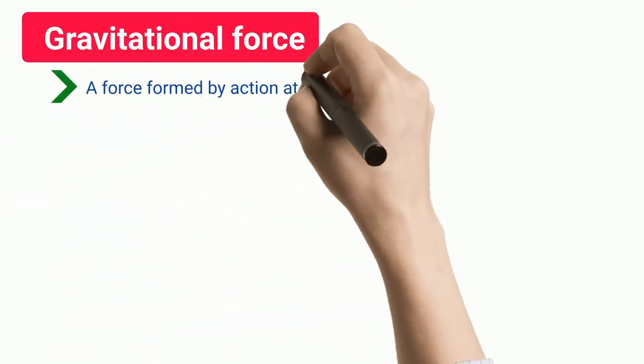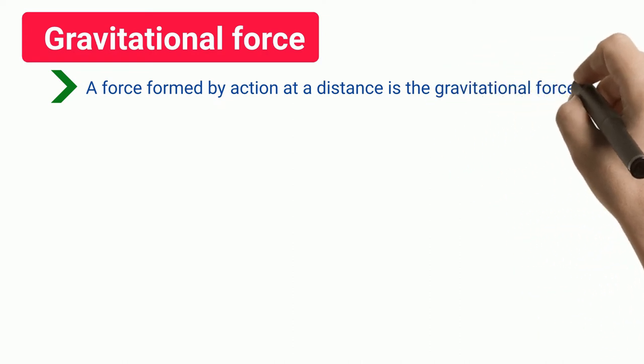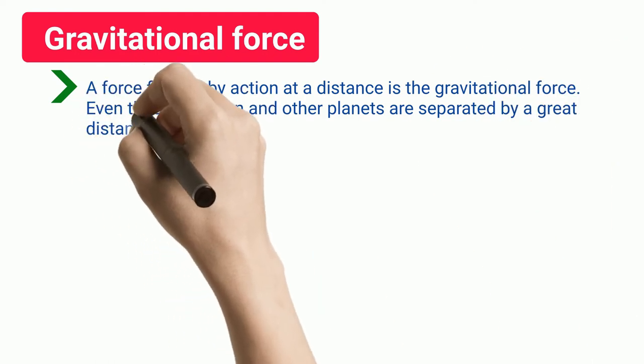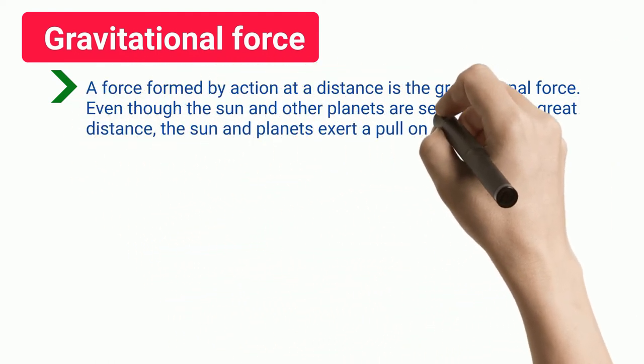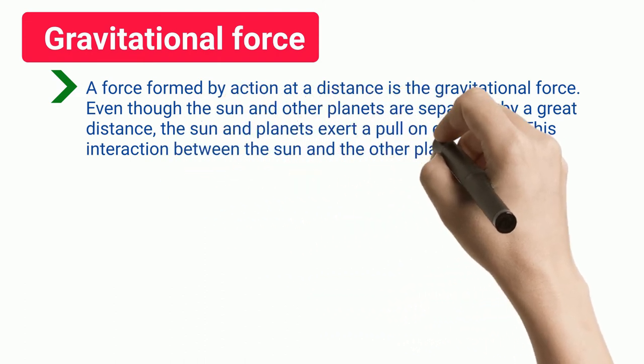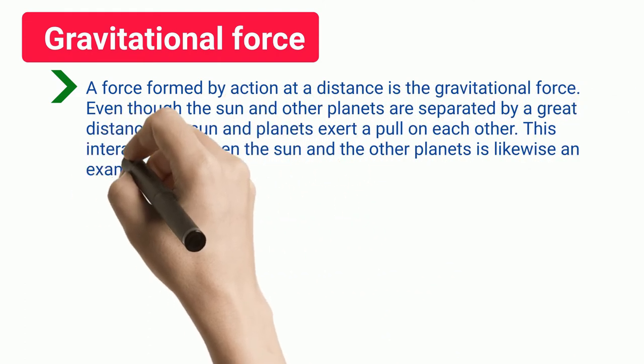Gravitational force is a force formed by action at a distance. Even though the sun and other planets are separated by a great distance, the sun and planets exert a pull on each other. This interaction between the sun and the other planets is likewise an example of force producing from afar.